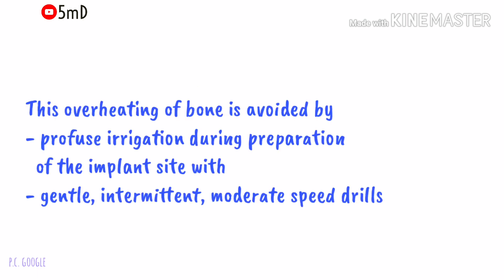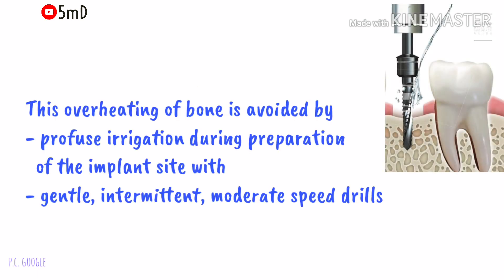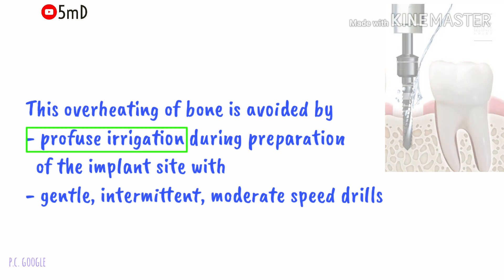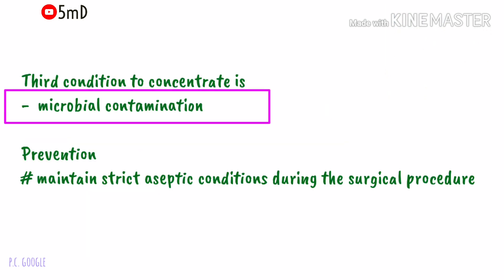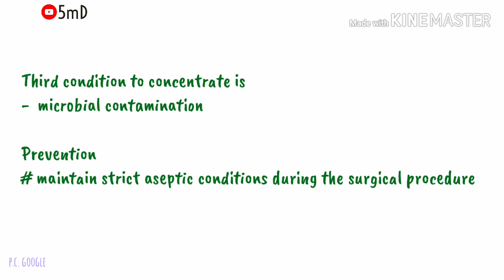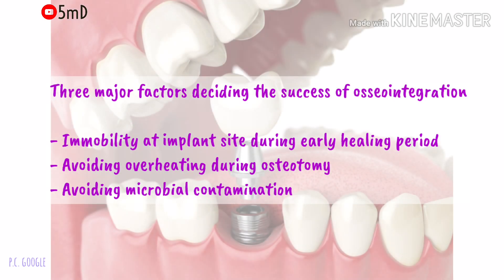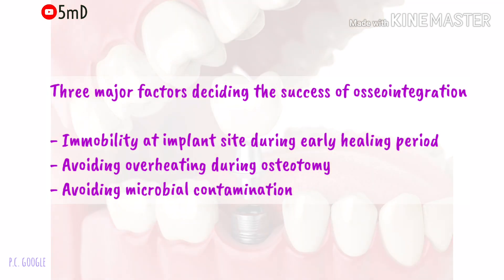Overheating is prevented by profuse irrigation of the implant osteotomy sites with gentle intermittent moderate speed drills. The third factor to be careful about is microbial contamination; strict aseptic methods during surgery can avoid this. In summary, the three most important factors determining the success of osseointegration are: first, immobility of the implant site and avoiding excess occlusal loads in the initial healing period; second, avoiding overheating; and third, avoiding microbial contamination.